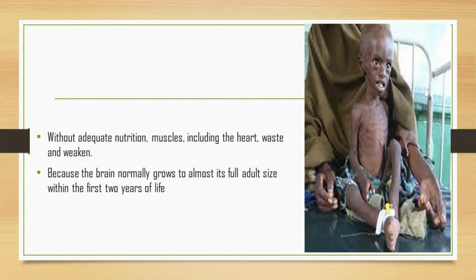Low heart rate, blood pressure, and body temperature can lead to heart failure in some cases. The immune system is also compromised, making undernourished people more prone to infection and illness and slower to recover. Children with chronic marasmus will not have the physical resources to grow and develop as they should. They may be stunted in size or have developmental delays or intellectual disabilities, and these effects can be lasting even in children who receive treatment.